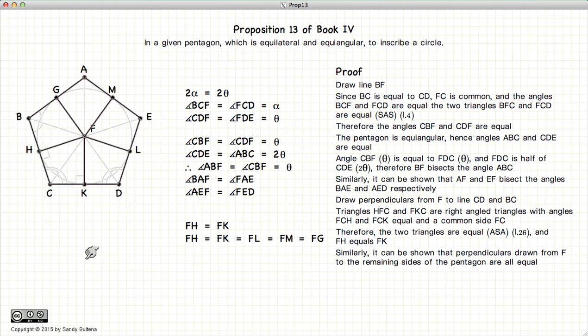And similarly, we can show that FH and FK are equal, and FG and FH are equal, or in other words, that all of these lines are equal, which means that if we use F as the center of our circle, and any one of these lines as the radius, it will pass through each point.